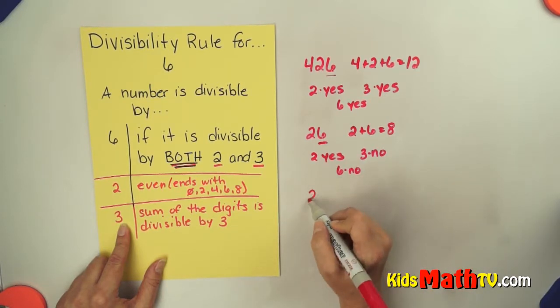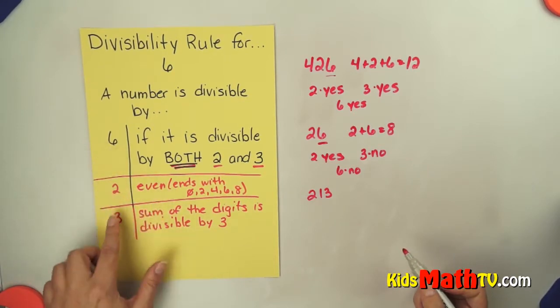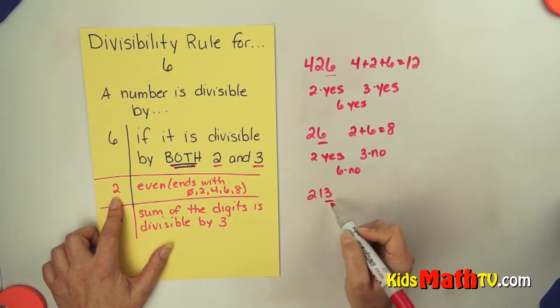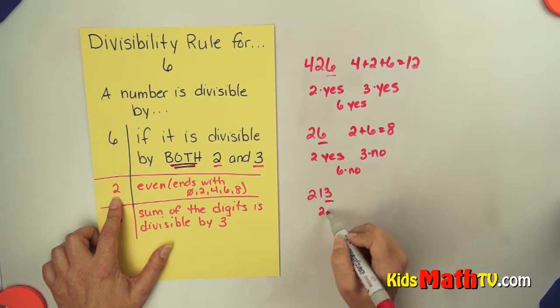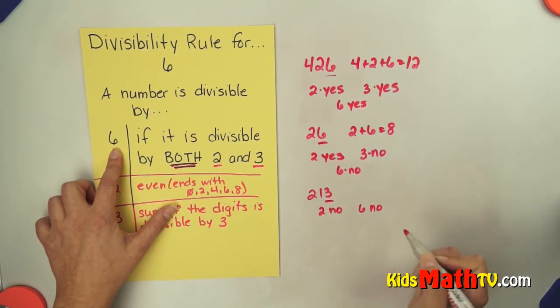Let's do another example. How about 213? 213. Is it even? Nope. So right away, if it is not divisible by 2, if it's not an even number, it is not divisible by 6. So it is not divisible by 6.